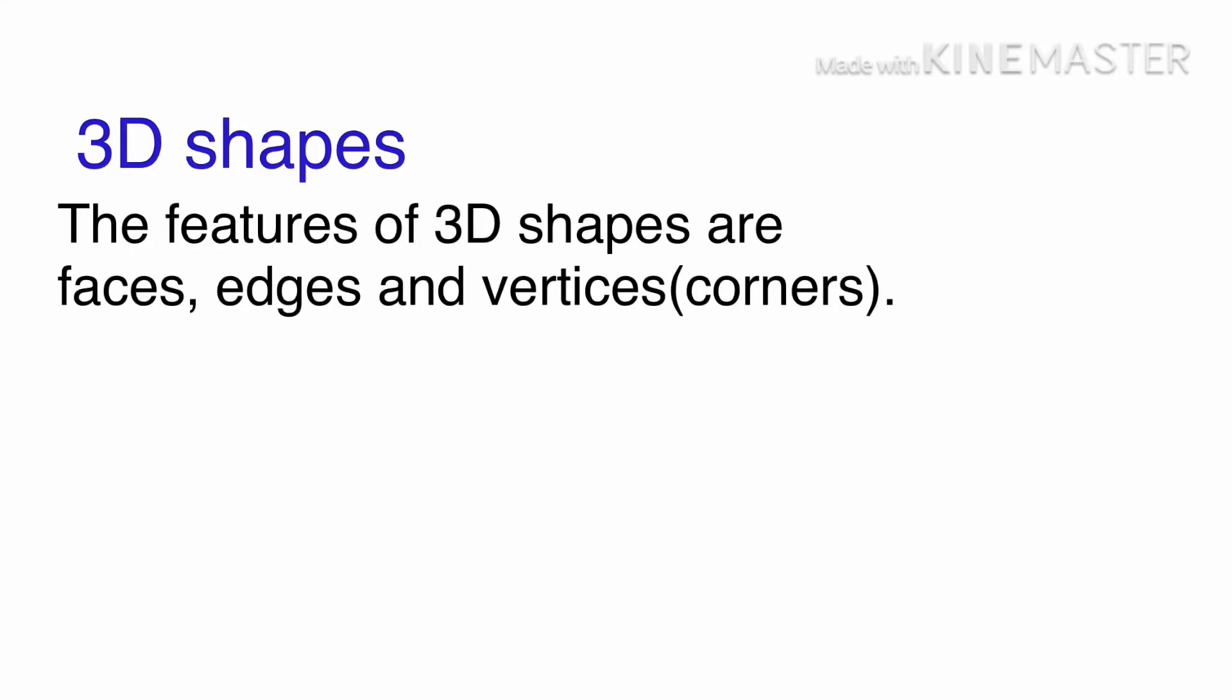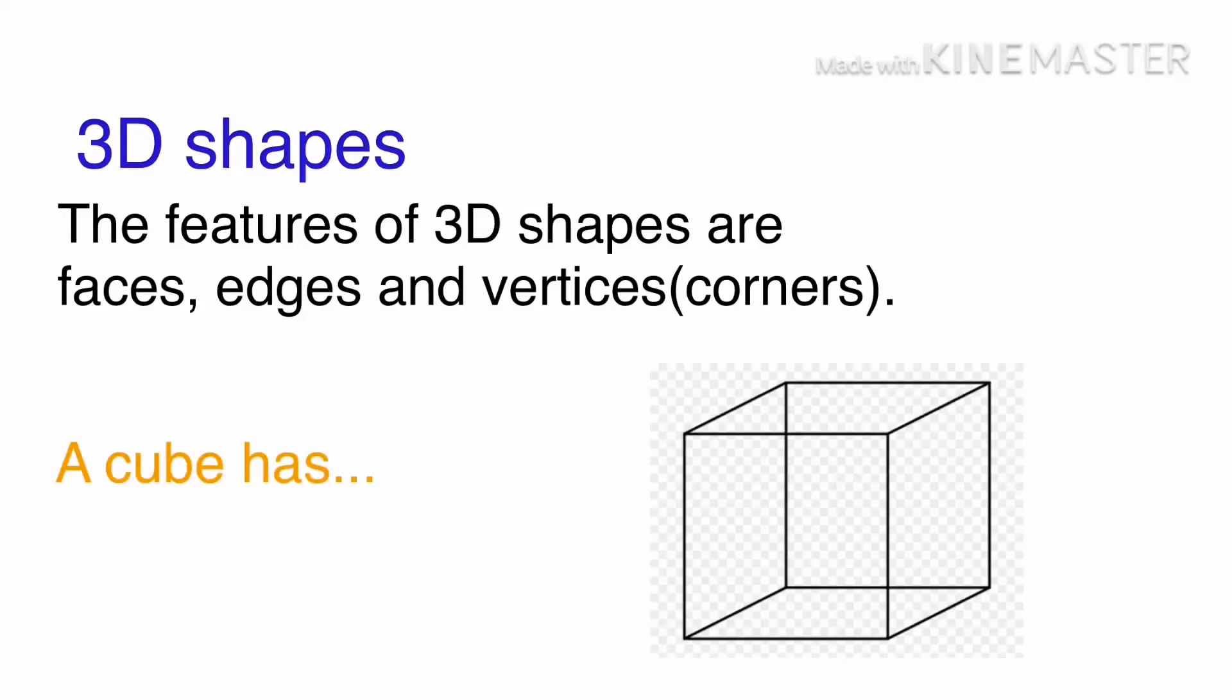The features of 3D shapes are faces, edges, and vertices, which are corners. For example, a cube has 6 faces, 12 edges, and 8 vertices.